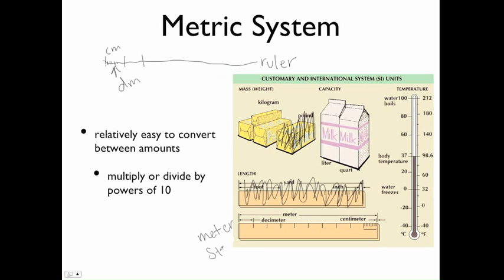And the reason we use metric, and the reason scientists use metric, is because it's really easy to convert between amounts. You'll do a lot of conversions, you did some of that in chemistry. And you just multiply or divide by powers of 10, and we will do more of this in the dimensional analysis video.